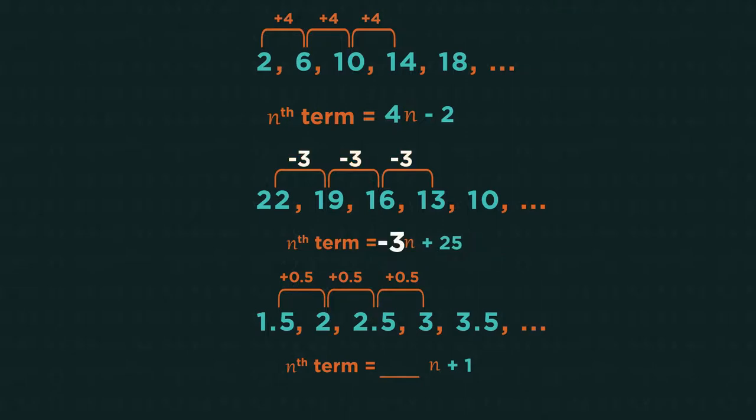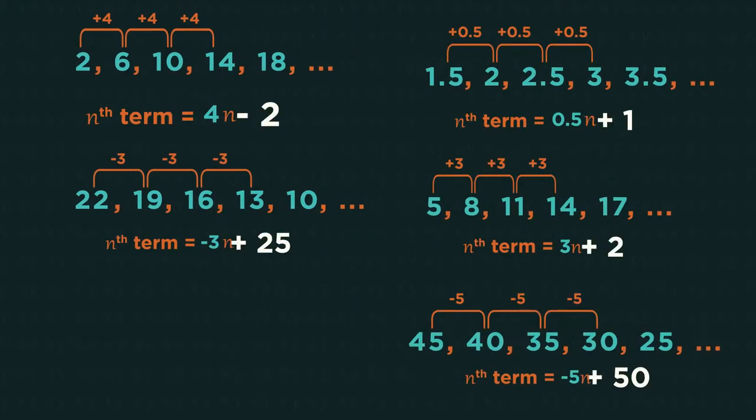So the formula is minus 3n. Difference of a half, so the formula is 0.5n. Now looking at the numbers after the n's.